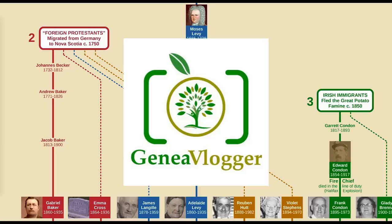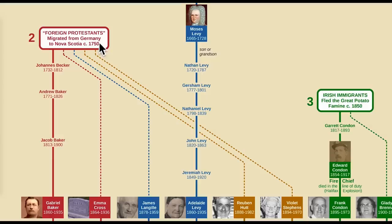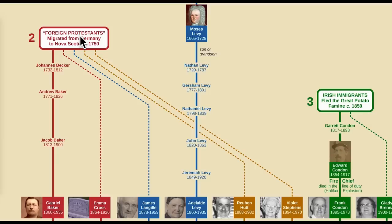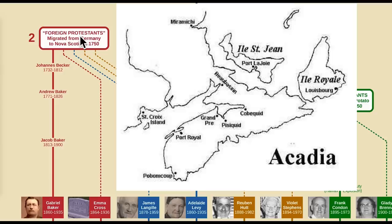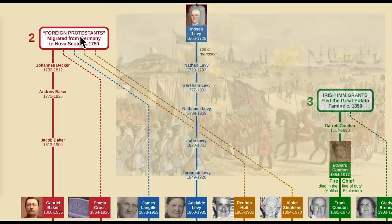Now let's go to the second migration story, which is the main one for my family because most of my ancestors can trace their lines to this particular event in history. It's called the Foreign Protestant Migration. To explain it, let me tell you a bit of Canadian history. For thousands of years, the area now called Nova Scotia was home to a First Nations people called the Mi'kmaq. Then in the 1600s, the French built colonies there and named it Acadia. But eventually in the 1700s, the British defeated the French and took over the colony, which still mostly consisted of French Catholics.